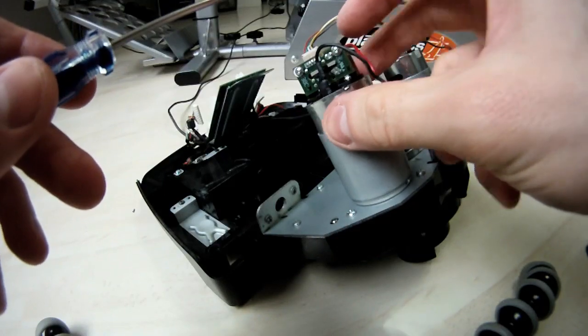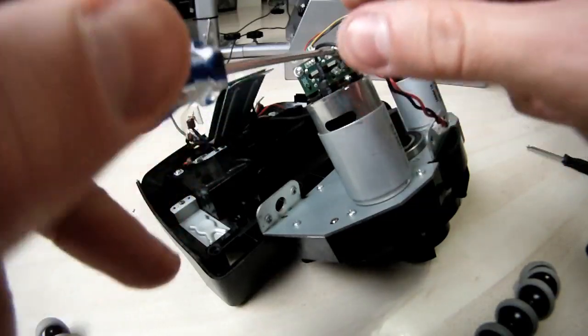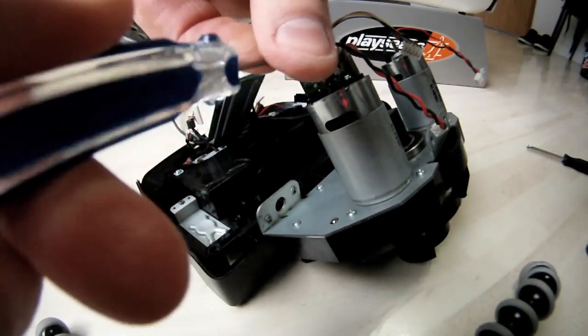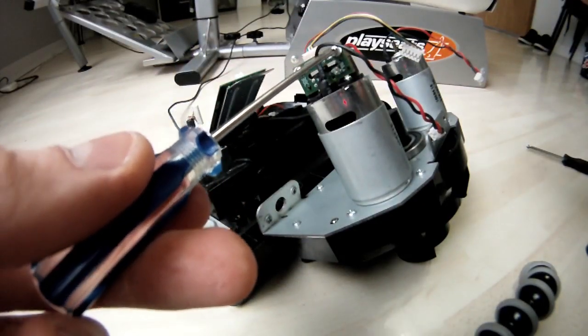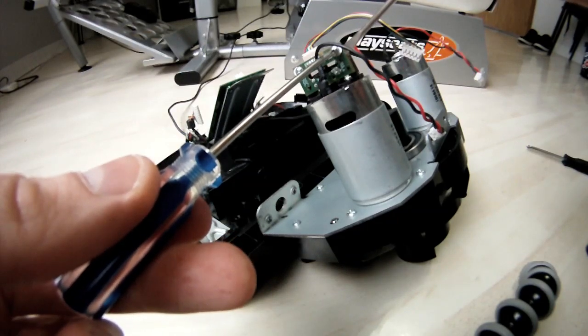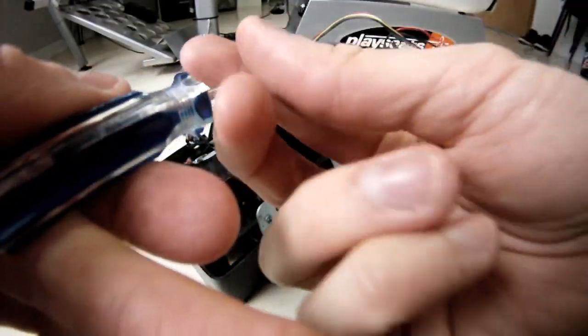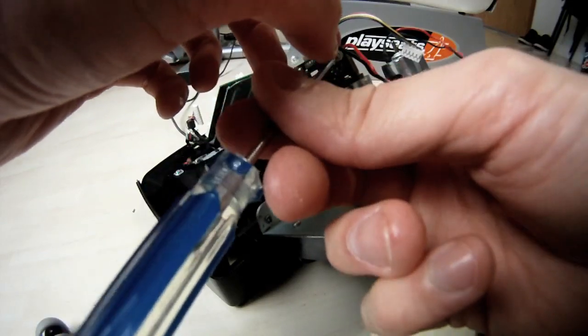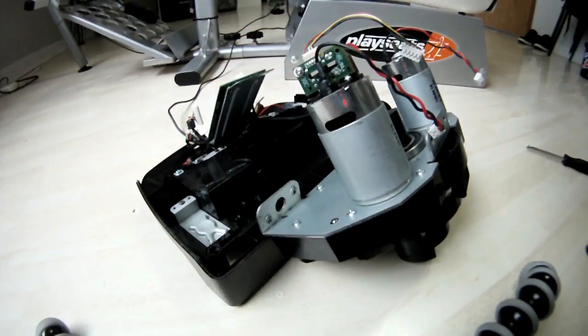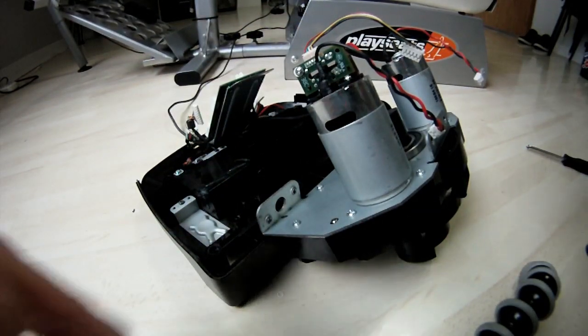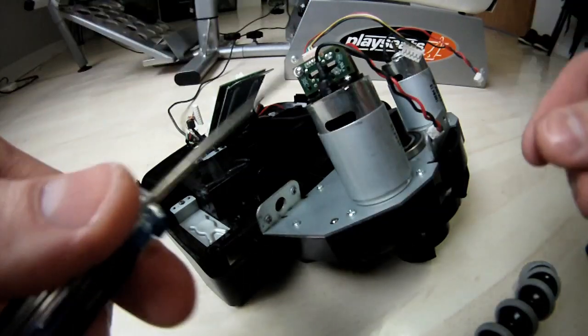We are going to loosen these two screws so we can remove this little circuit board. Be careful because there's this little white washer thing, make sure you do not lose that. Take the other one out.